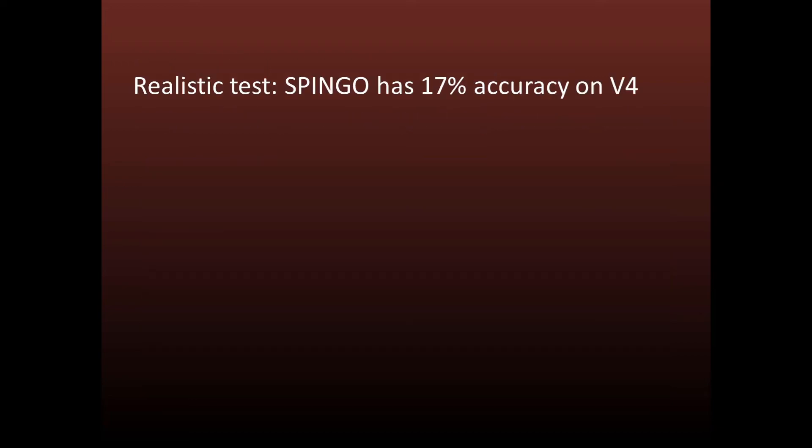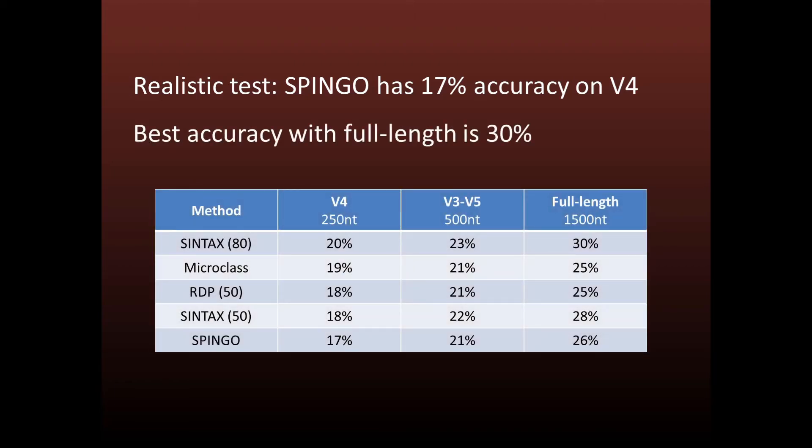On a more realistic test, I found that Spingo has only 17% accuracy on V4. Even with full length sequences, the best methods had accuracy of only 25 to 30%.